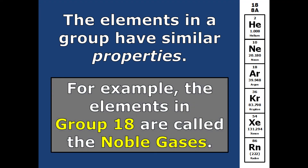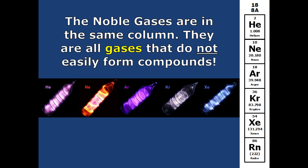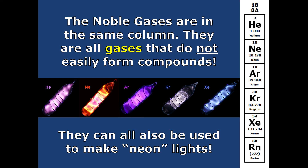Elements in the same group have similar properties. For example, elements in group 18 are called noble gases. They are the least reactive — non-reactive. Their valence shell is full. You cannot say they all have eight electrons in their outer orbital, because helium does not follow that rule. Helium is part of the first row on the periodic table, which only has one outer orbital that can hold two electrons, so it is full when there are two electrons in it. You can actually YouTube noble gases to see them in action — they're pretty awesome. And of course, they can be used as neon lights.